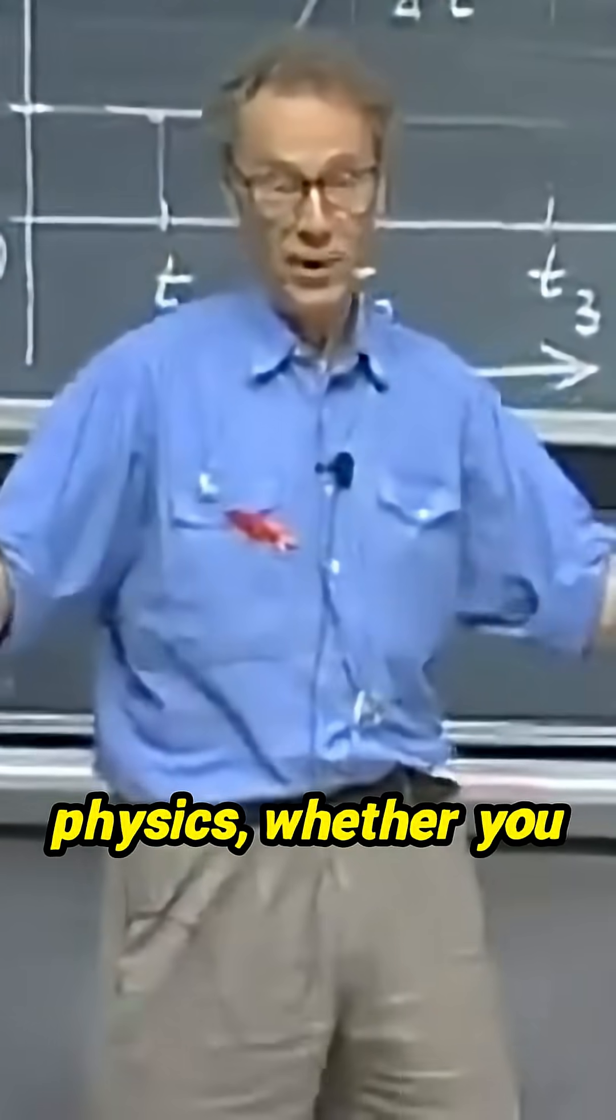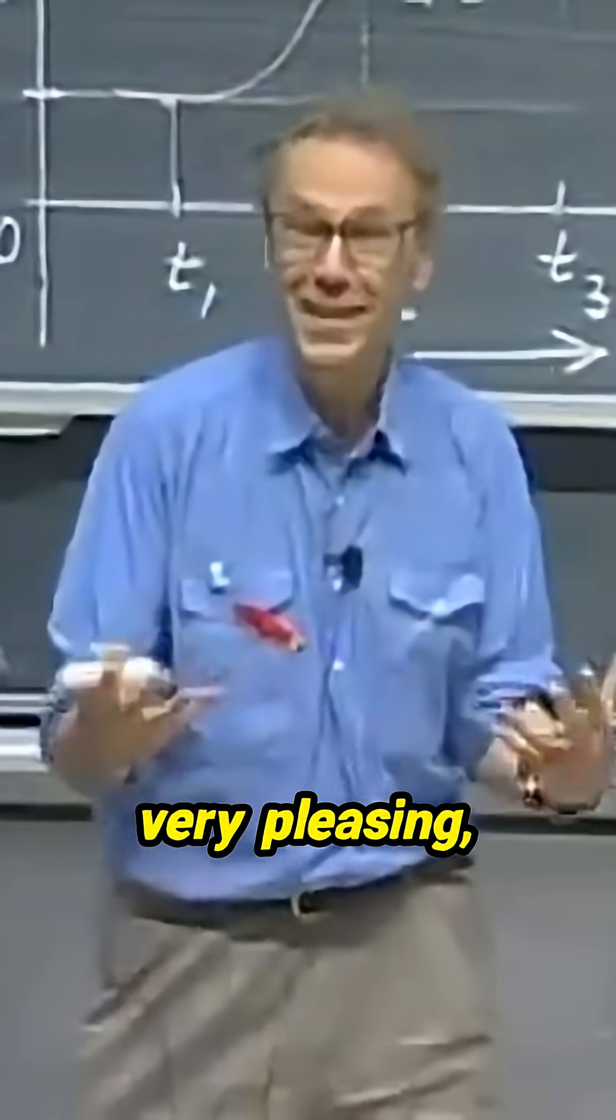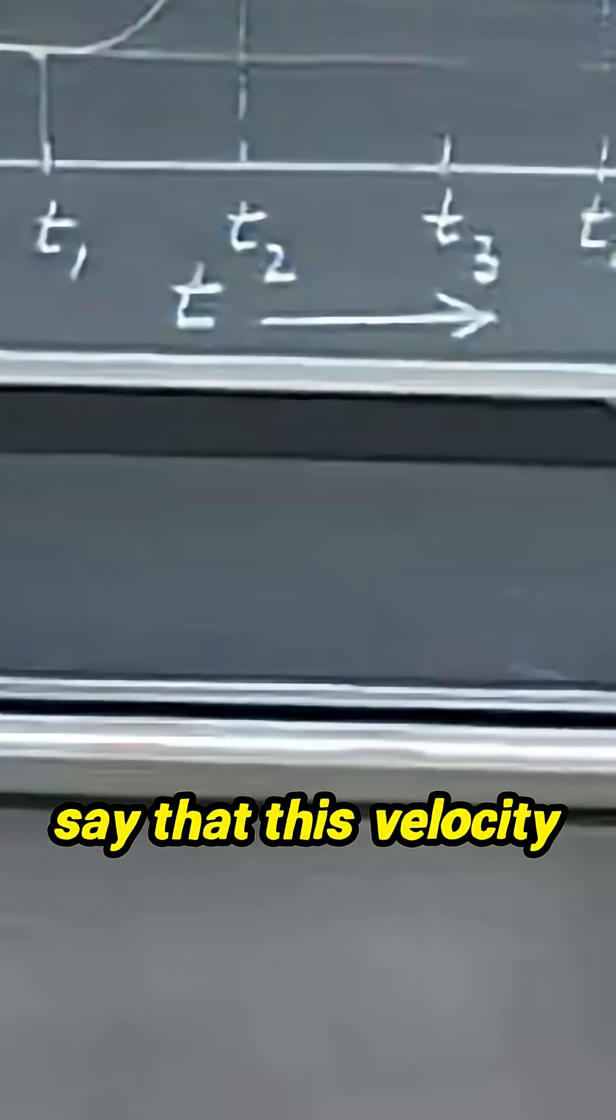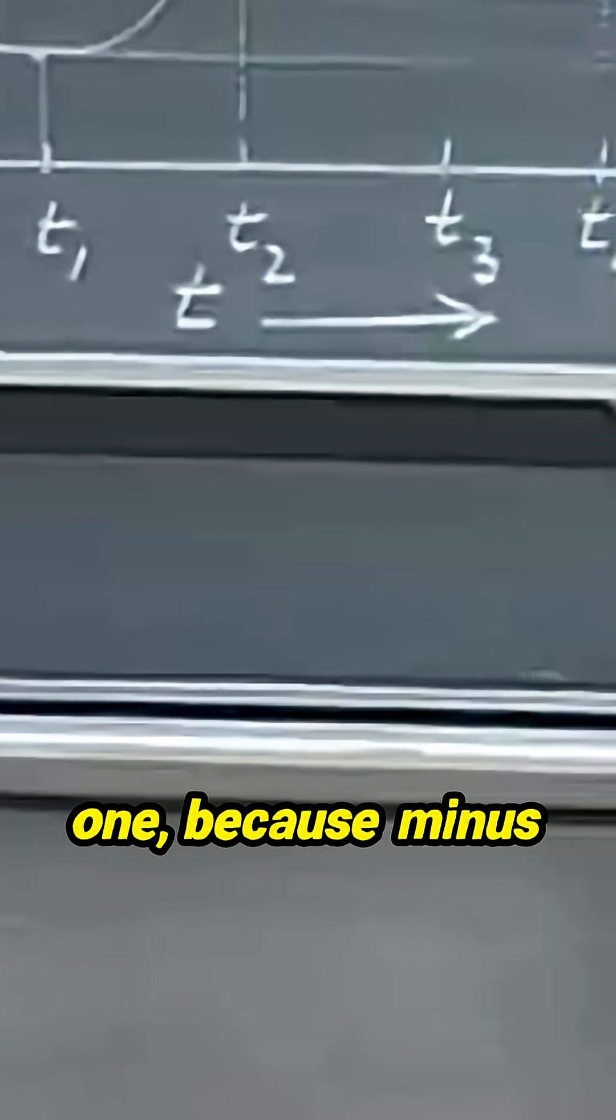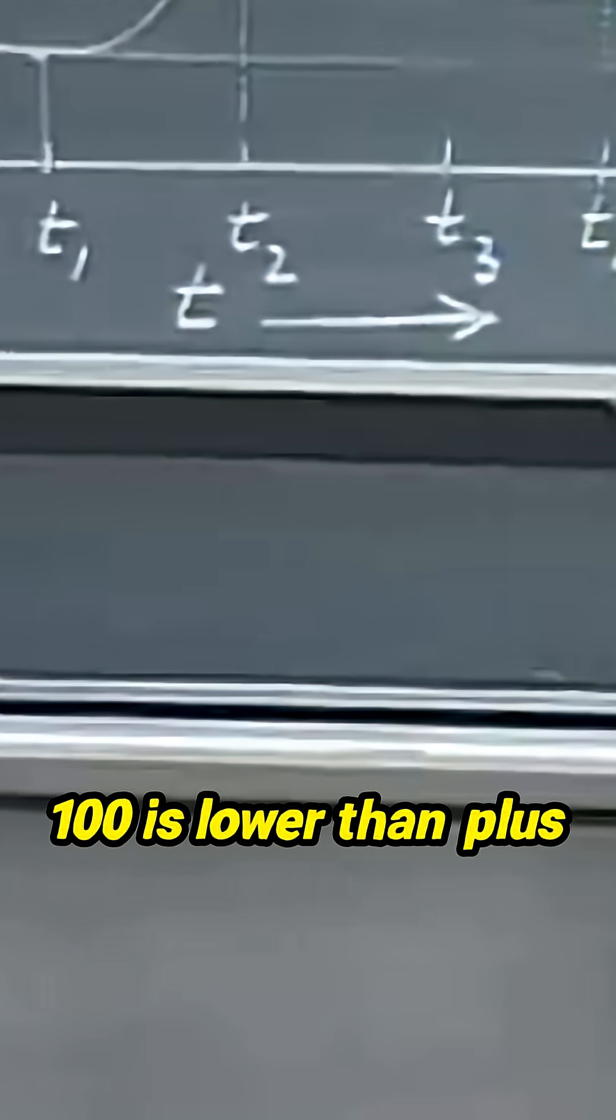Then we would have to say in physics, whether you like it or not, it's not very pleasing, but you would have to say that this velocity is lower than that one, because minus 100 is lower than plus 30.